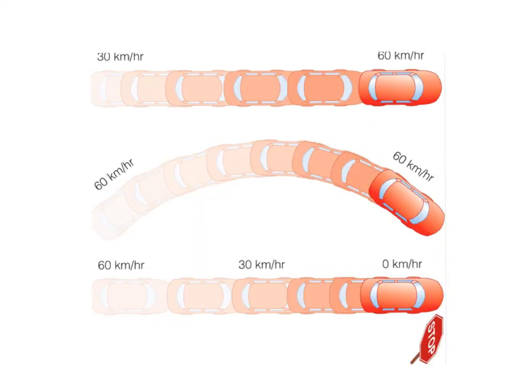Okay, so take a second and look at each of these cars, and see if you can figure out in what way each of these cars is accelerating. Pause the tutorial, and think about it, and then come back and listen to my explanation. Okay, so the first car is increasing its speed from 30 km per hour to 60 km per hour. So an increase in speed is an acceleration.